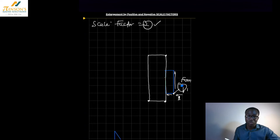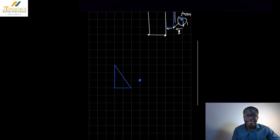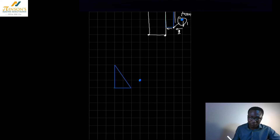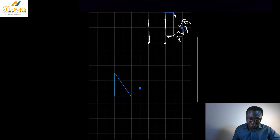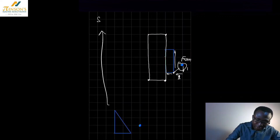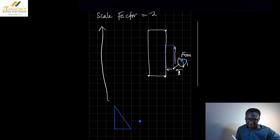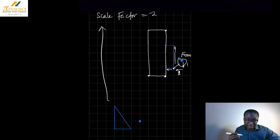Now we're going to look at a case where the scale factor is negative. For example, we have the blue triangle and the scale factor is minus two. A negative sign simply means go in the opposite direction, and because it says two, we go twice the distance.